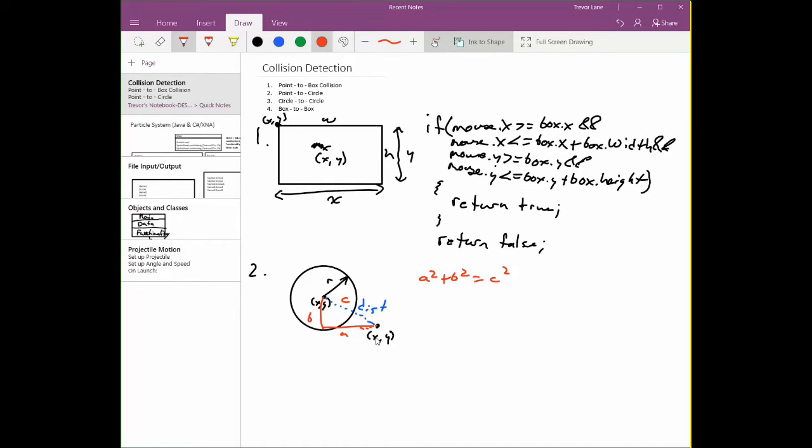So that's mouse x minus circle x squared. So we have mouse dot x minus circle dot x. We're going to square that. We're going to add on to that the b value, which is mouse dot y minus circle dot y.